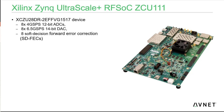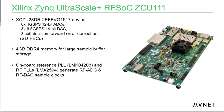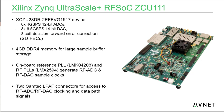The ZCU111 contains the XCZU28 device, which includes 8 four-gigasample-per-second 12-bit ADCs, 8 six-gigasample-per-second 14-bit DACs, and 8 soft decision forward error correction blocks (SDFec). To support these converters, there are 4 gigabytes of DDR4 memory, ideal for large sample buffer storage. Onboard reference PLLs and RF PLLs generate the necessary RF ADC and RF sample clocks. The RF front end is interfaced via two SAMTEC LPAF connectors, providing access to the RF ADC and RF DAC clocking and data path signals.